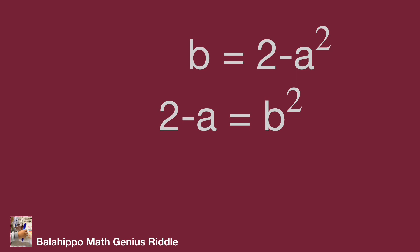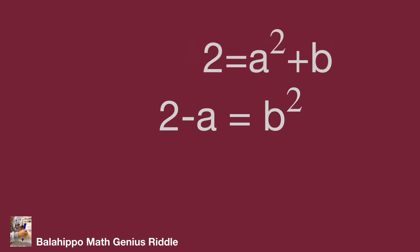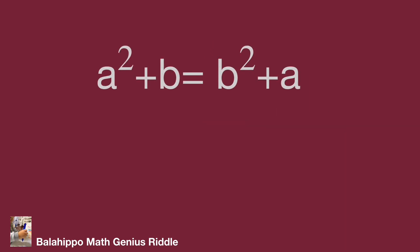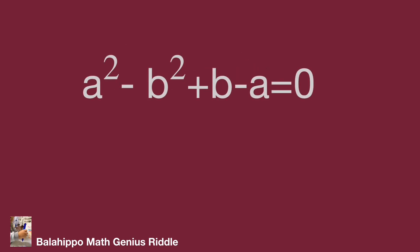Now we have 2 new equations with 2 unknowns. Rearranging the first equation gives 2 = a² + b. The second equation gives 2 = b² + a. Substituting a² + b in place of 2 into the second equation, we get a² + b = b² + a.